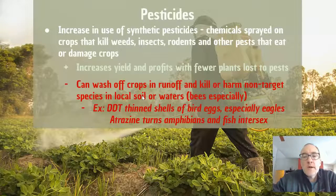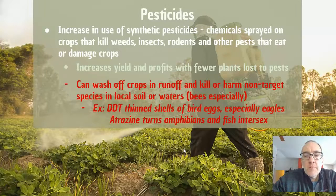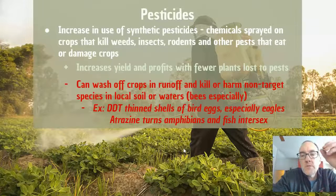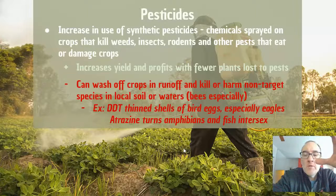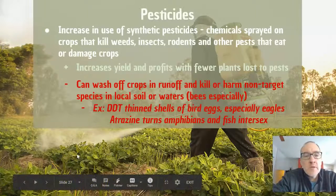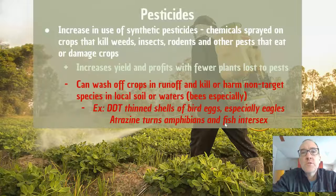A classic example combining GMOs and pesticide issues is Roundup Ready soybean. Using a genetically modified process, a gene is inserted into the soybean plant to make it resistant to Roundup, a commonly used herbicide that typically kills all plants. So you can spray heavily with Roundup and the soybean does not die. The negative is that this eliminates a lot of biodiversity of any other plants in the area, and it promotes heavy use of herbicides — combining the genetically modified issue with the pesticide issue.